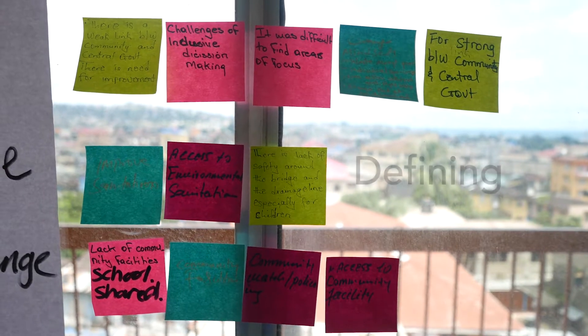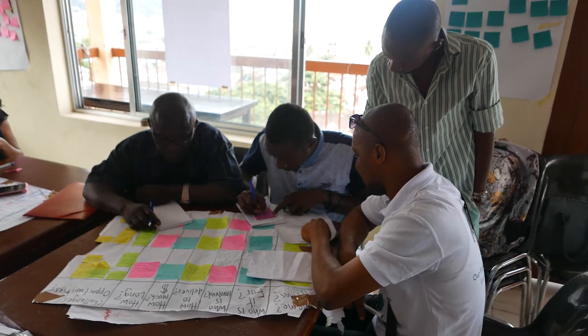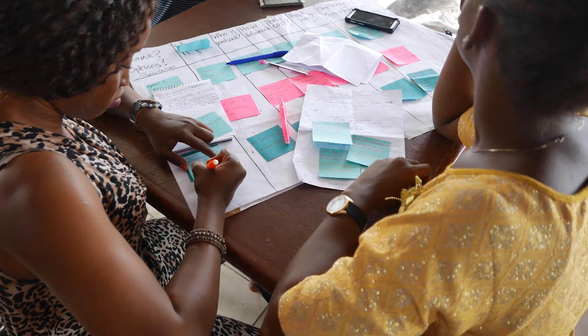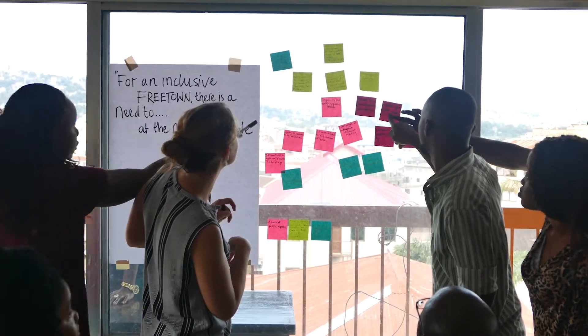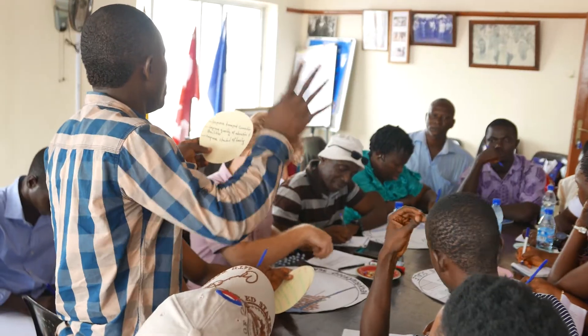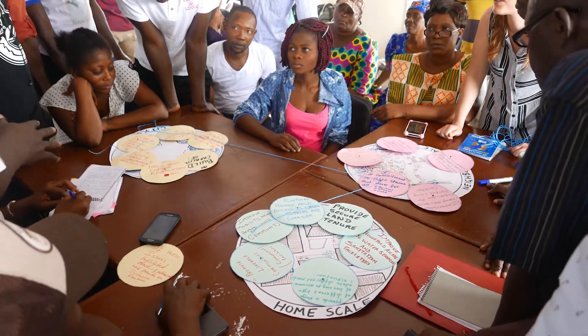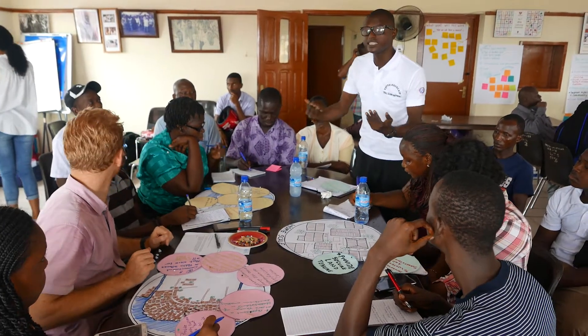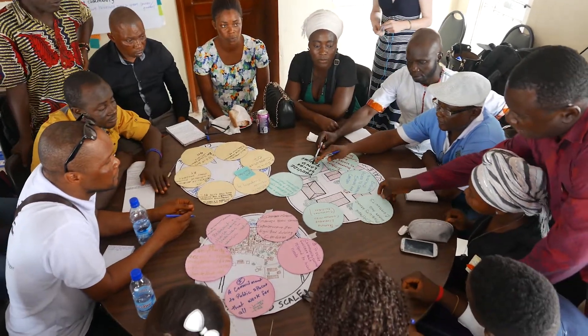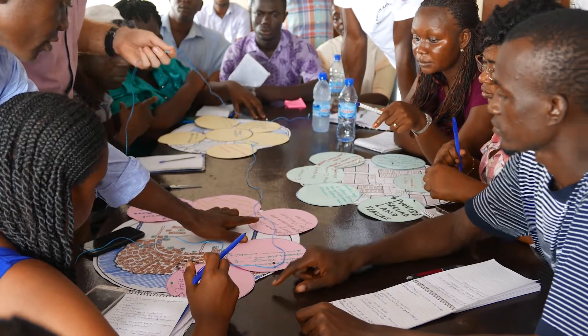The final day was devoted to the defining stage. This initially saw groups have their final meetings as they defined five points that were required for a more inclusive Freetown at their specific scale. Participants from the different groups then worked together to consolidate their findings from across the three scales. Members from each scale explained what they had been working on to other groups, then identified common themes and discussed priorities for action, revealing the challenges and opportunities for implementing future action.